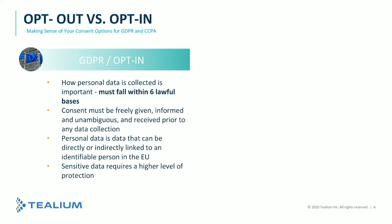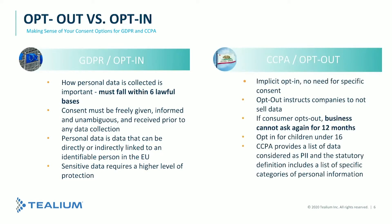Within GDPR, consent must be freely given, informed, unambiguous, and received prior to any data collection. Personal data is directly or indirectly related to a person within European states, and sensitive data requires a higher level of protection. For CCPA requirements, the major difference is implicit opt-in — there is no need for explicit consent before data collection. This is the key distinction I've spent most of my time explaining to American companies.